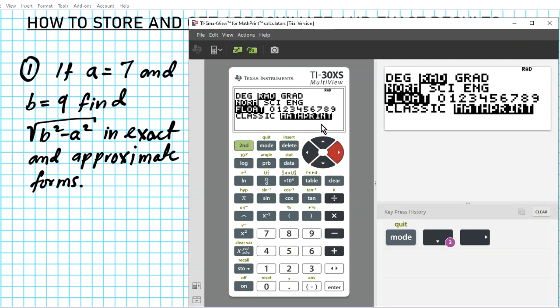Math print represents exact format and classic represents approximate form. If your answer is in an irrational format, then it will be rounded up for you. Alright, so we want exact first and after we do exact, we'll change the mode and then we'll do approximate. So we have math print selected because it's highlighted here. Quit.